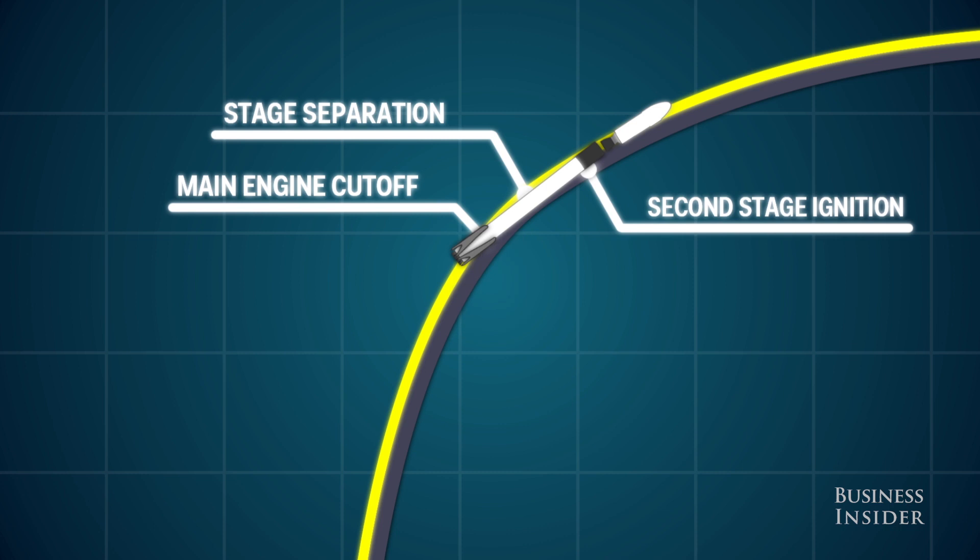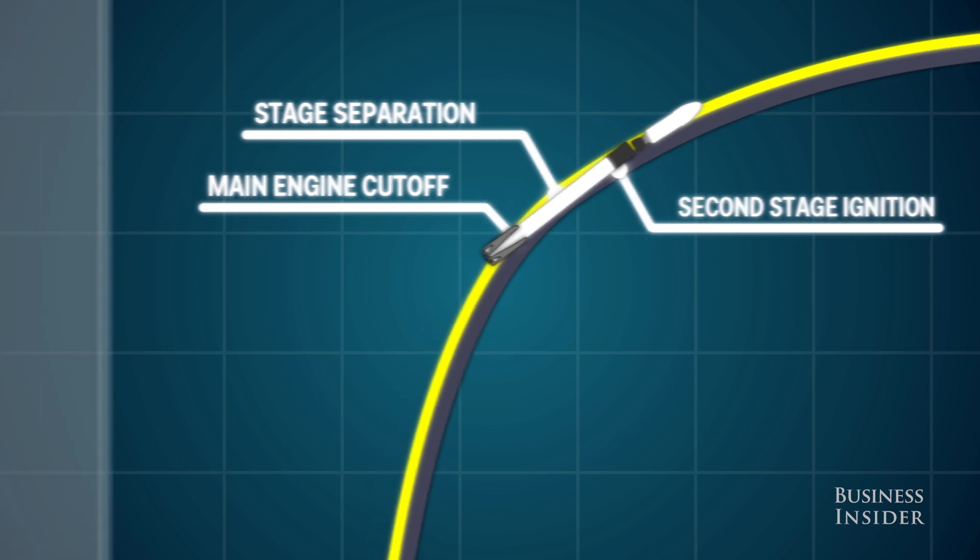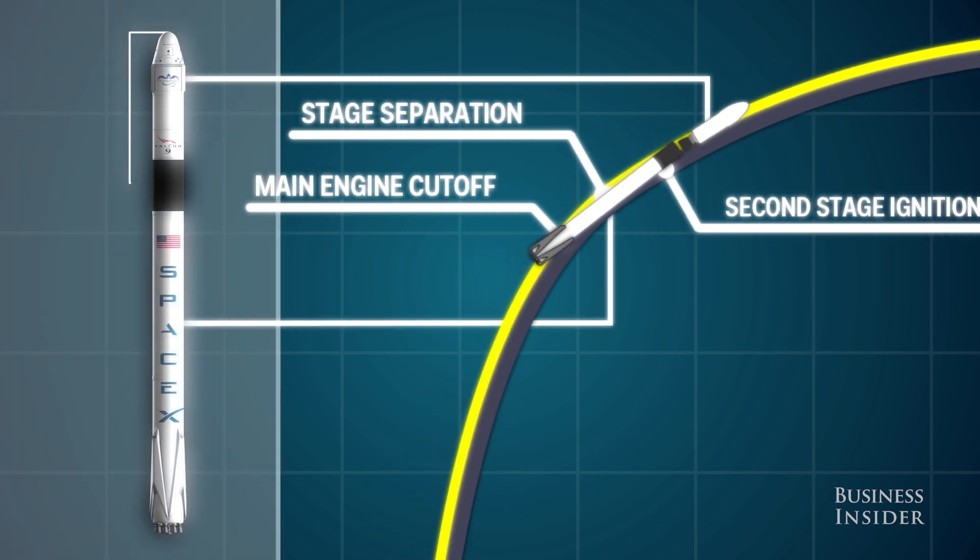SpaceX rockets have two separate pieces, called the first and the second stage. The first stage gets the rocket into space, while the second stage transports the payload the rest of the way to its destination.